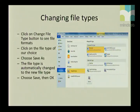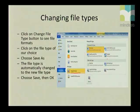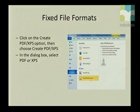To change the file types, click on Change File Type and then in the right-hand pane it will tell you what options you have — you can save as an Open Document text, a template, plain text, and more. Once you've made your choice, click Save As. For fixed file formats — if you don't want your file edited and only read — save it as a PDF or XPS.